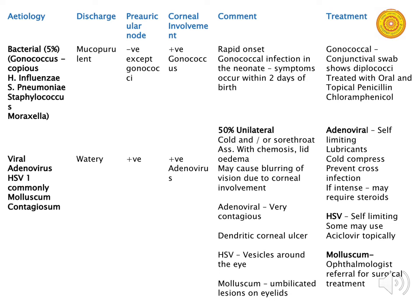Bacterial conjunctivitis usually causes bilateral red eye. Viral causes are about 50% unilateral and 50% bilateral. Specific features help distinguish different viruses — for instance, herpes simplex virus can produce vesicles around the eye, while molluscum contagiosum produces umbilicated papules on the eyelids and surrounding the eye.